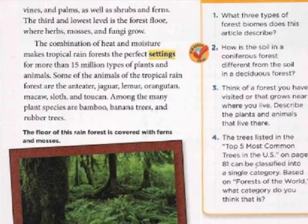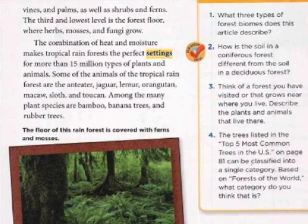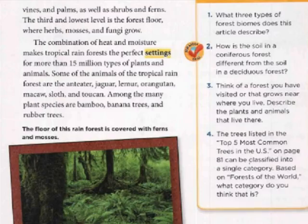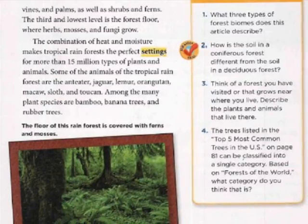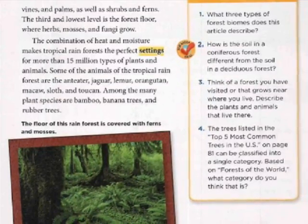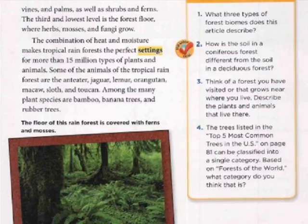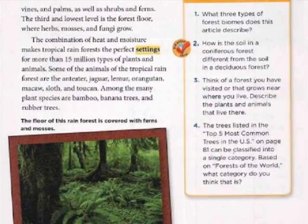Some of the animals of the tropical rainforest are the anteater, jaguar, lemur, orangutan, macaw, sloth, and toucan. Among the many plant species are bamboo, banana trees, and rubber trees.